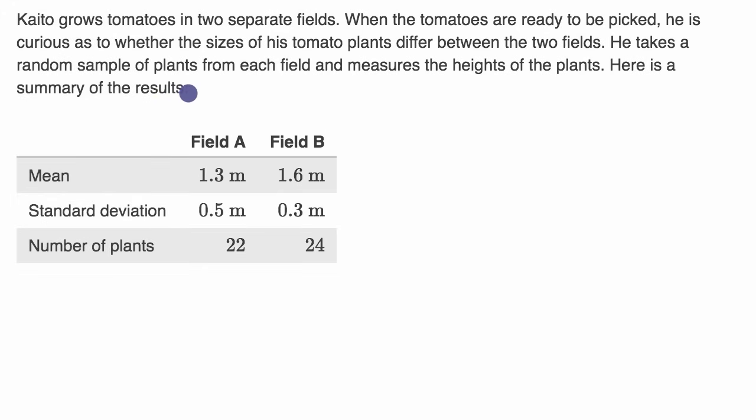What I want you to do is pause this video and conduct a two-sample t-test here. Let's assume that all of the conditions for inference are met: the random condition, the normal condition, and the independence condition. And let's assume that we are working with a significance level of 0.05. Pause the video and conduct the two-sample t-test here to see whether there's evidence that the sizes of tomato plants differ between the fields.